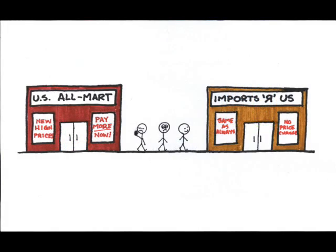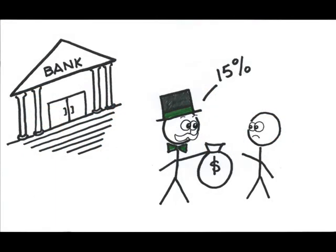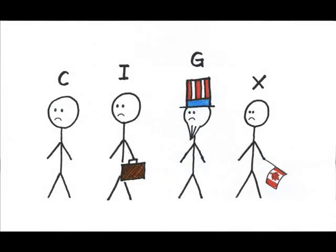Households, businesses, and the foreign sector shy away from buying our more expensive goods. Also, higher prices tend to drive interest rates up, more on that later when we discuss credit markets, but that also depresses the amount of goods and services that the four sectors can buy or want to buy.